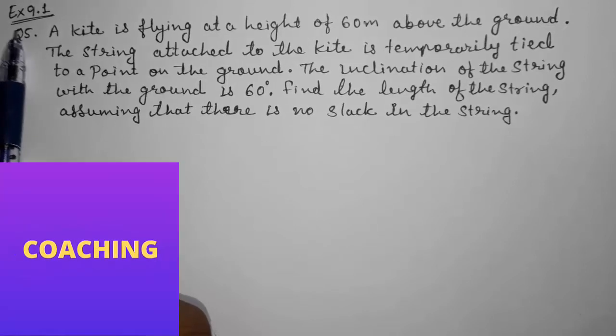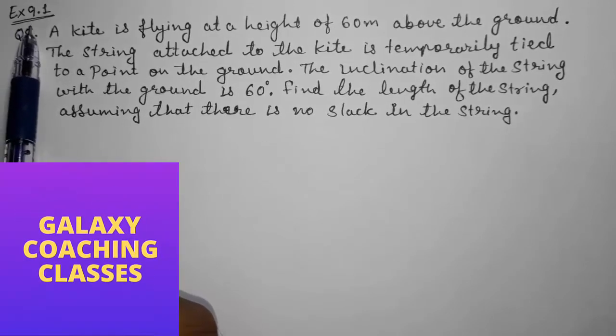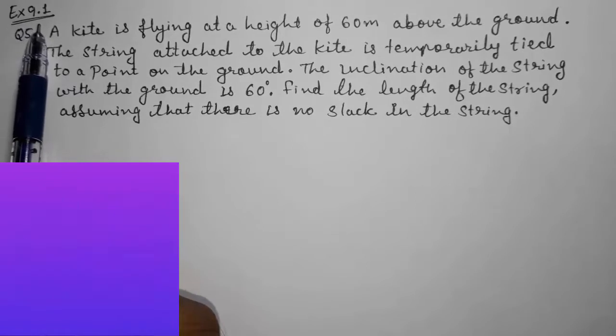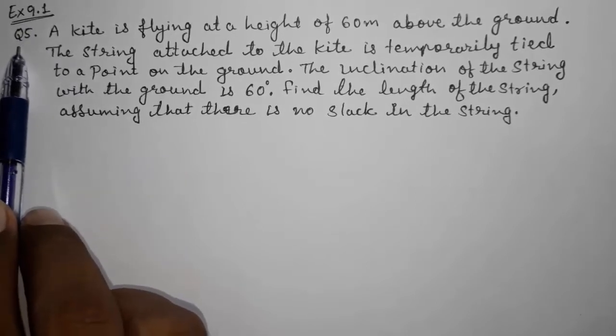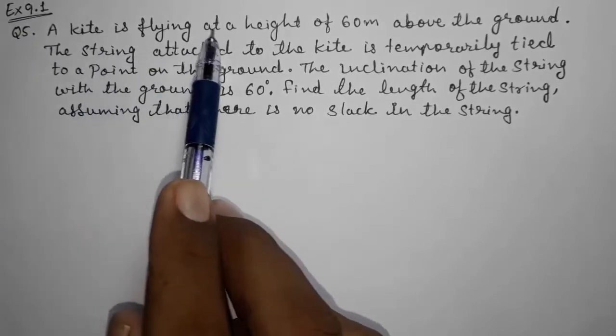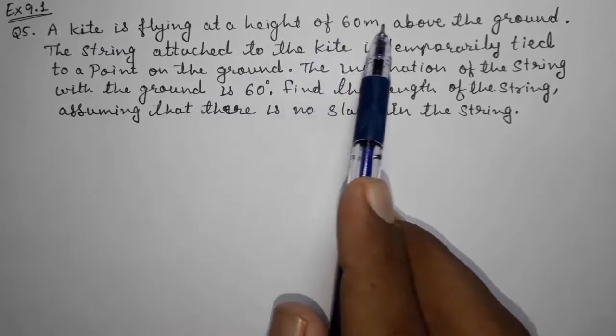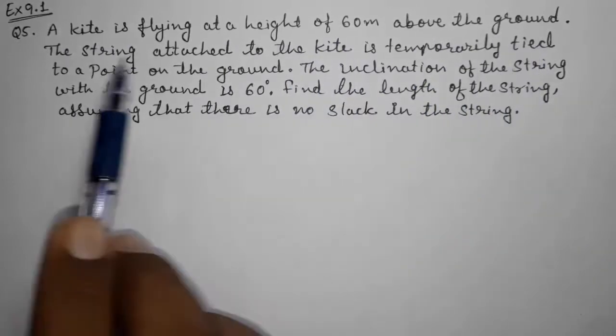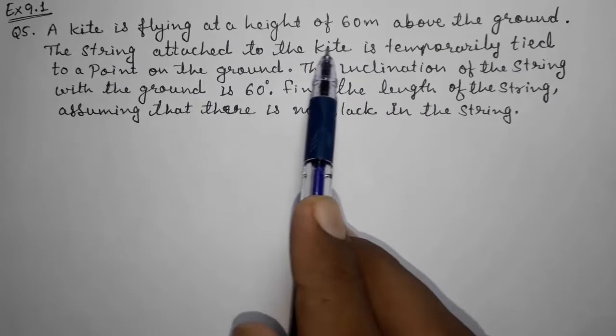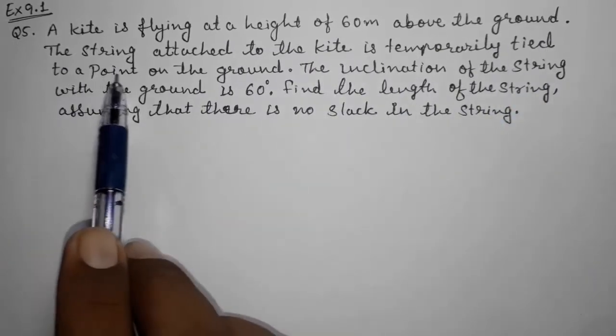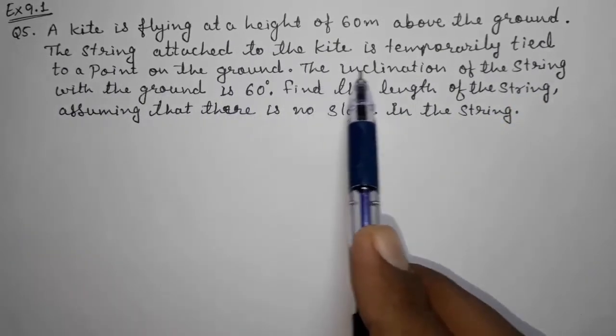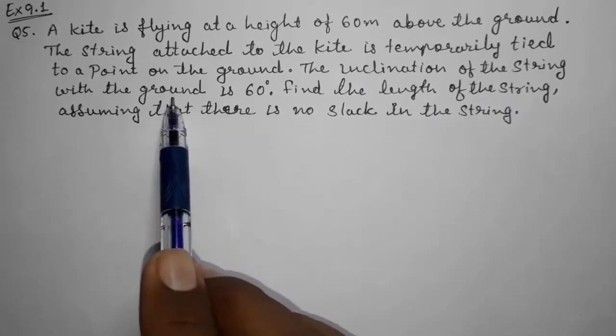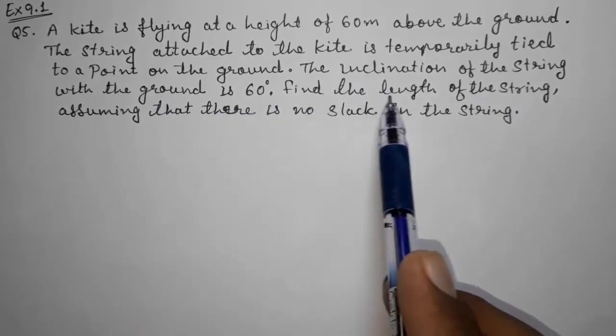Hello friends, today we are going to solve CBSE Class 10th Maths Exercise 9.1, Question Number 5. A kite is flying at a height of 60 meters above the ground. The string attached to the kite is temporarily tied to a point on the ground. The inclination of the string with the ground is 60 degrees. Find the length of the string assuming that there is no slack in the string.